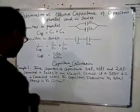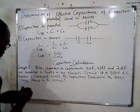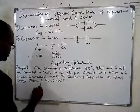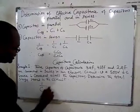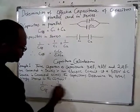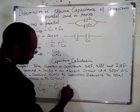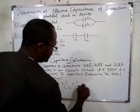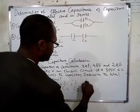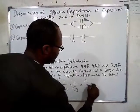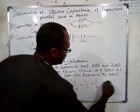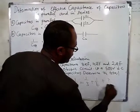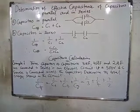For series connection, the effective capacitance is given by: 1 over C_eff equals 1 over C1 plus 1 over C2 plus 1 over C3, which is 1 over 3 plus 1 over 4 plus 1 over 2.